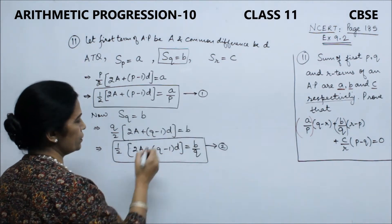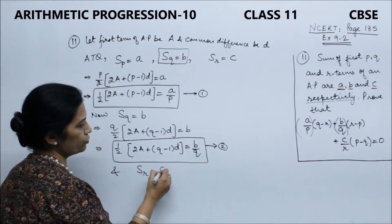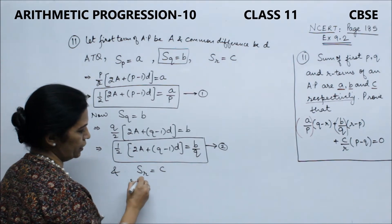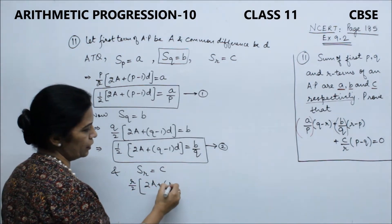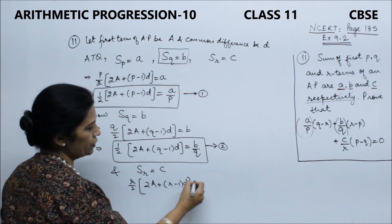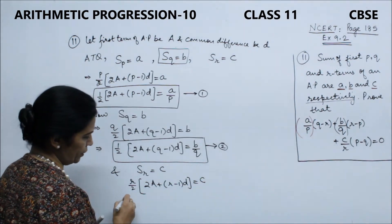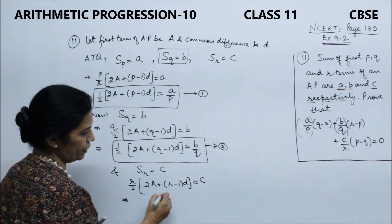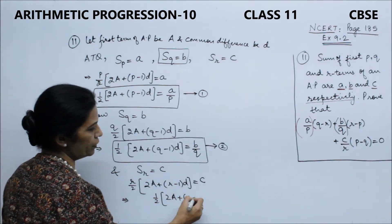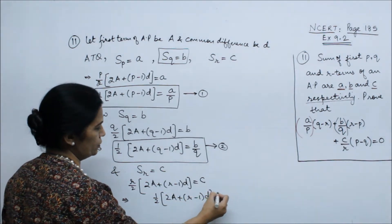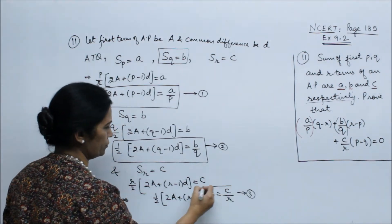And the third: S_R = C, so R/2 × (2·Capital A + (R−1)·D) = C. Rearranging: 2A + (R−1)·D = 2C/R. This is the third equation.